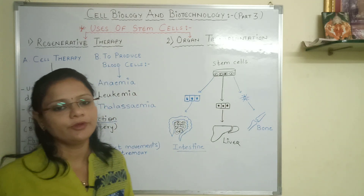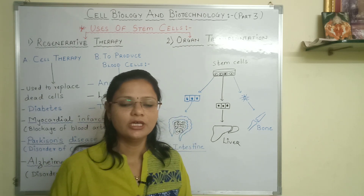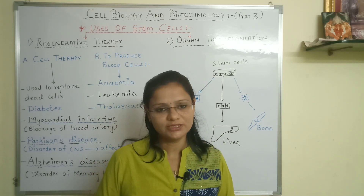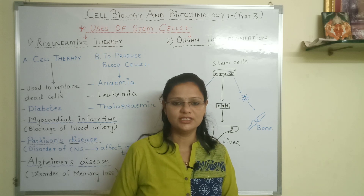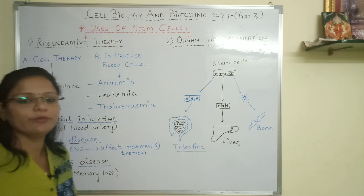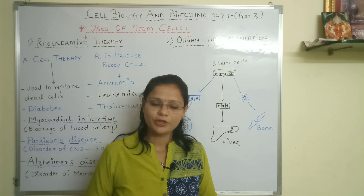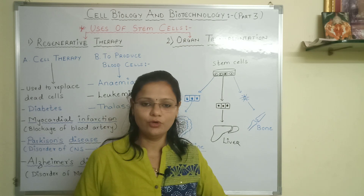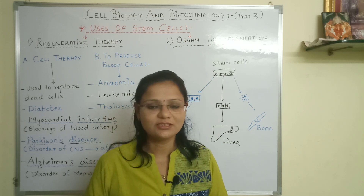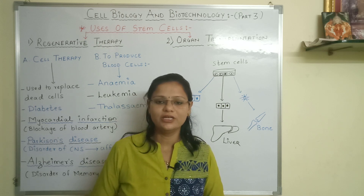The first condition is anemia. In anemia, the doctor checks for weakness and does a blood test to check the RBC count. In anemia, the blood cells are lower than normal, and stem cells can form new blood cells. The second condition is leukemia, which is a blood cancer in which blood cells are affected by cancer. We can replace them with the help of stem cells.